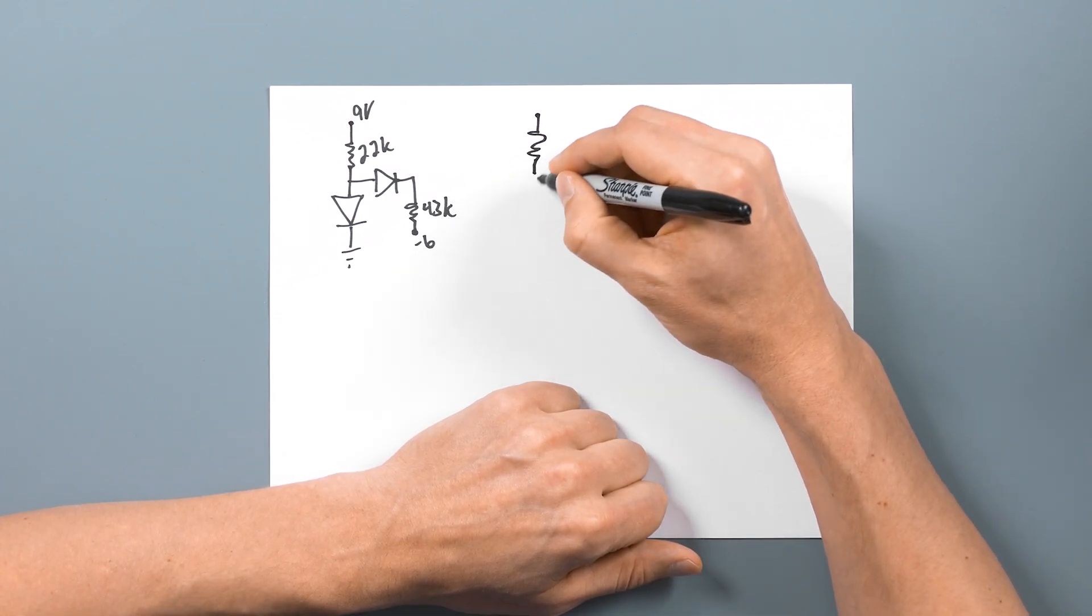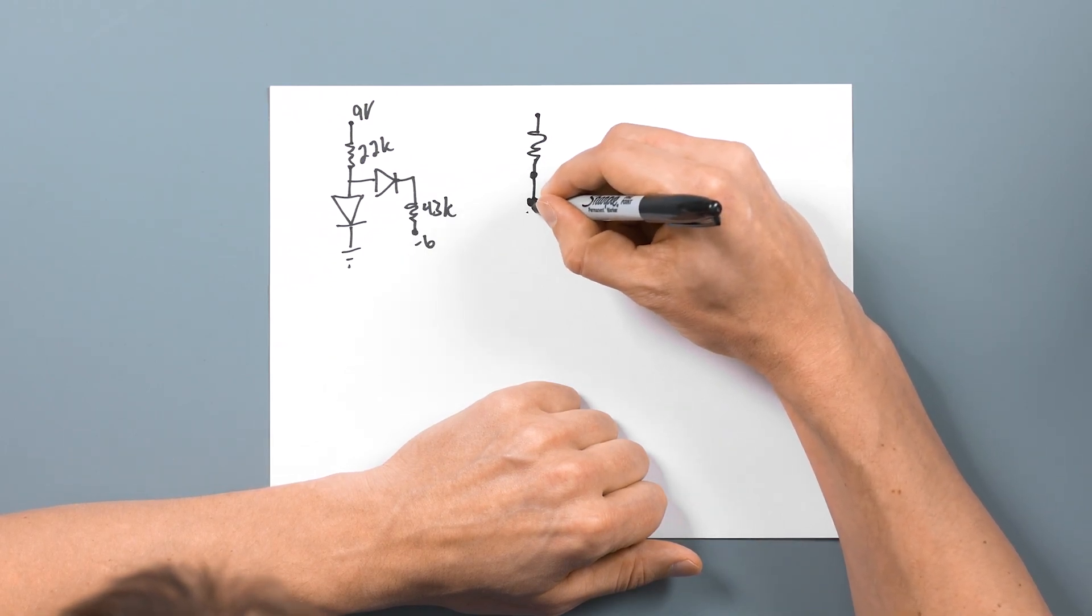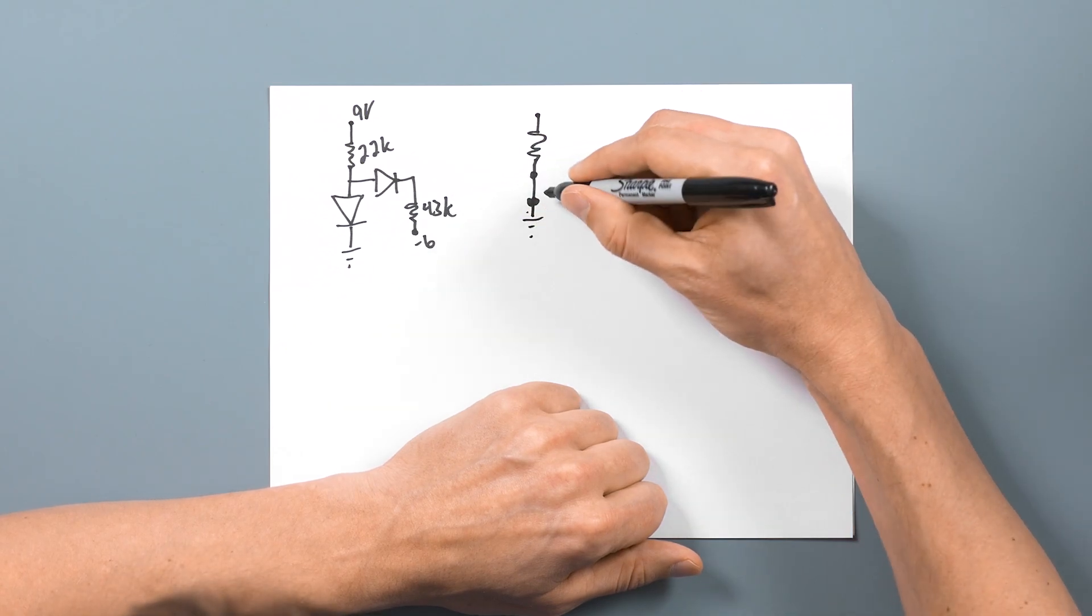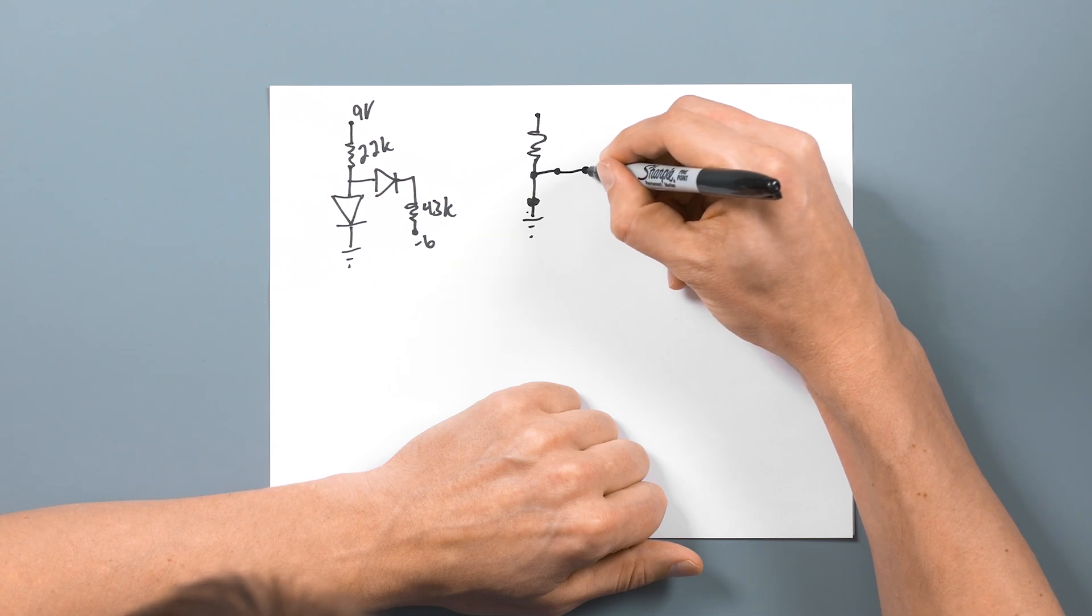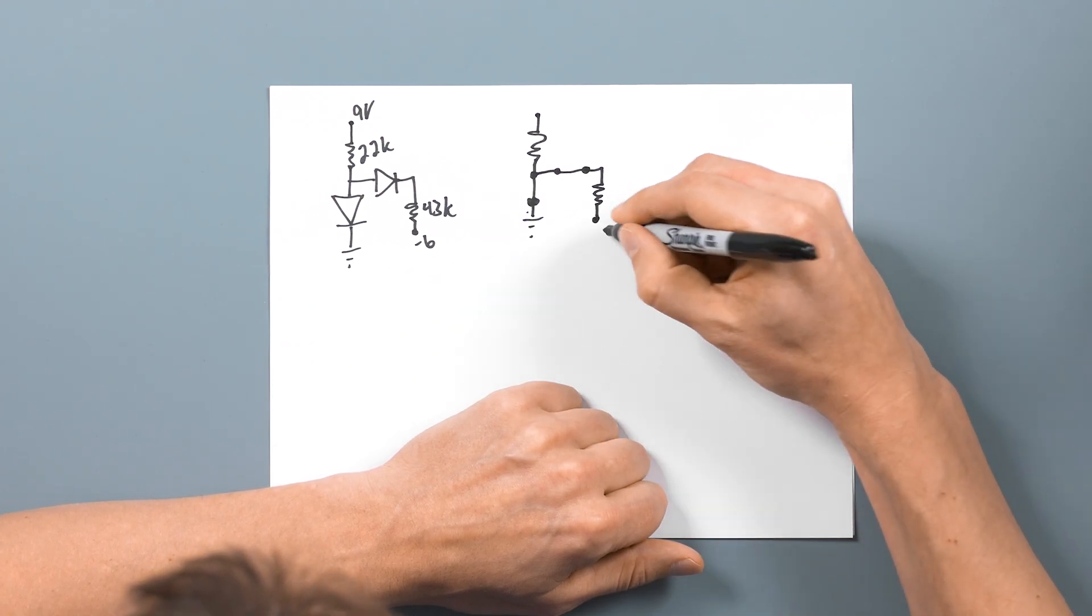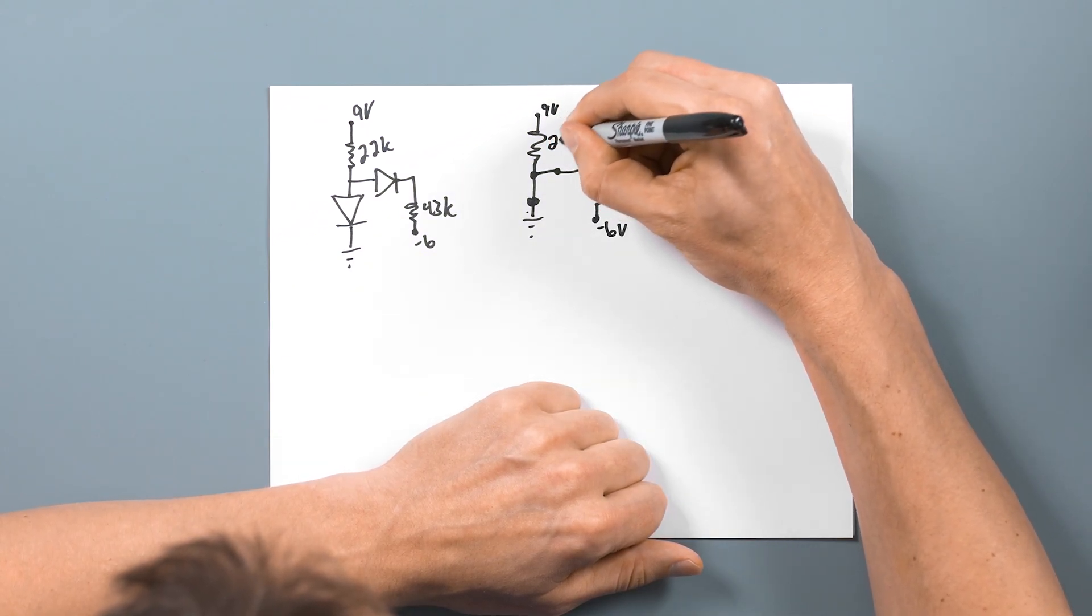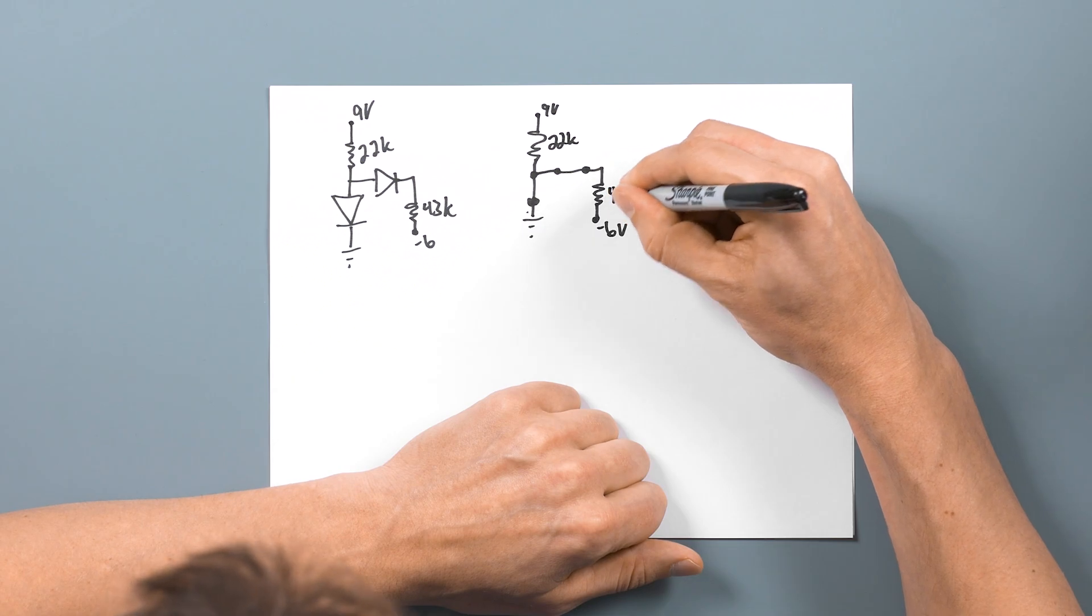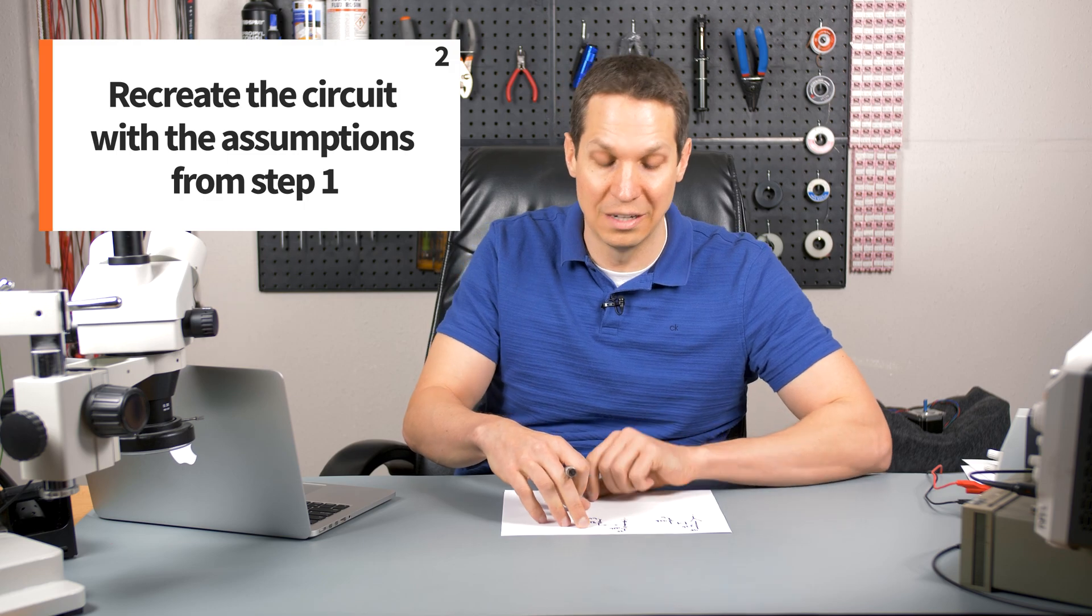So on this one, I'm going to look at this and say, I believe that this is going to be forward. So it's going to be treated as a short circuit in this ideal diode model. And then this will also be treated as a short circuit in the ideal model. So let's recreate this with those assumptions. So we're going to go down. And that actually didn't get any better. And then we'll put a node there, show that as a short circuit to ground. And then we'll go there and show that as a short circuit to 43k and negative six volts, positive nine volts, 22k and 43k. So that's our second step - now that we've made our assumptions, we've recreated the circuit.